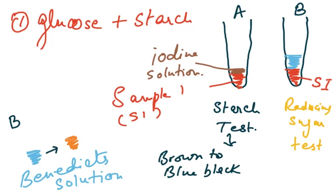To identify solution 1, which contains glucose and starch, you will do the starch test. You add iodine solution, which is brown in color. If it turns blue-black, that means starch is present. If it remains brown, starch is not present.